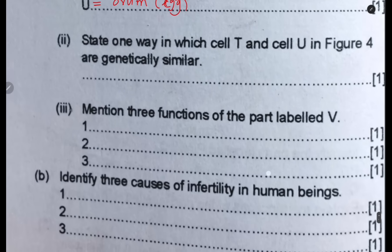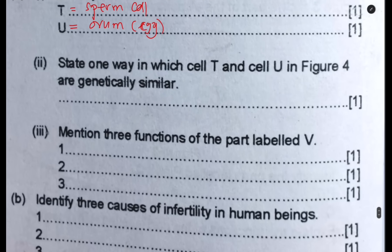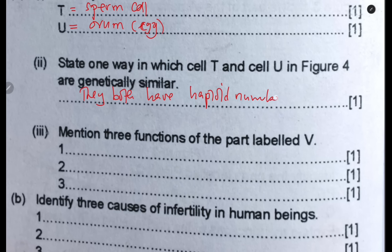State one way in which cell T and U in Figure 4 are genetically similar. Both the sperm and the ovum are produced by the process of meiosis, and they both have the haploid number of chromosomes. In humans, the full chromosome count is 46, but sperm and ovum each have 23 — the haploid number. When fusion occurs, it becomes diploid.